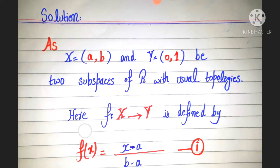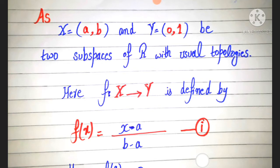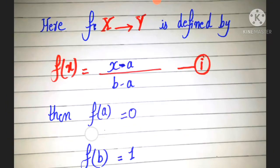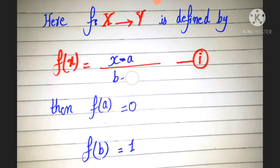Here we define a function f from X to Y, defined as f(x) = (x - a) / (b - a). This is equation number 1. Then f(a) = 0, by putting x = a in this equation, and f(b) = 1, by putting x = b in this equation.